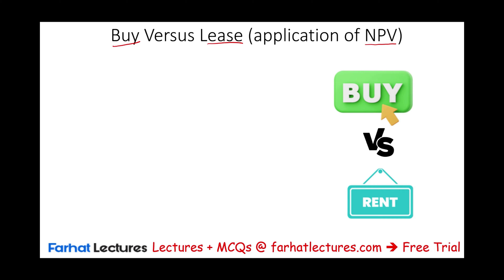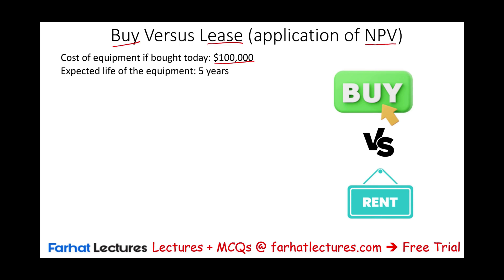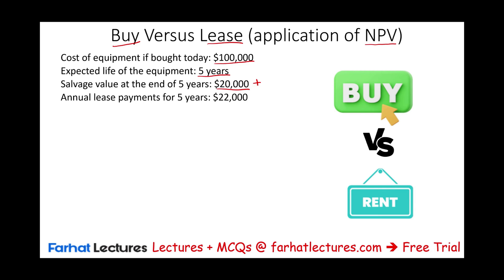This is the data we will be using to illustrate the concept. We're going to be buying a piece of equipment. If we purchase it today, it will be $100,000. The equipment is expected to last five years — that's the life of the equipment. The salvage value at the end of year five is $20,000, meaning this is how much money we can get for this asset after five years. If we leased the asset, it's going to be five annual payments of $22,000 starting a year from now. The discount rate — the cost of capital — is 8%, and the tax rate is 30%.